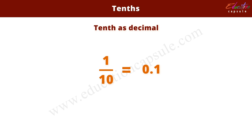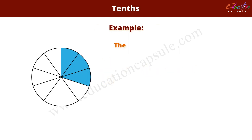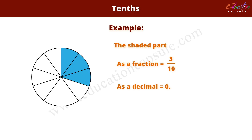Also, the first digit to the right of the decimal point represents tenths. For example, the shaded part here as a fraction is three out of ten. As a decimal, it is zero point three.